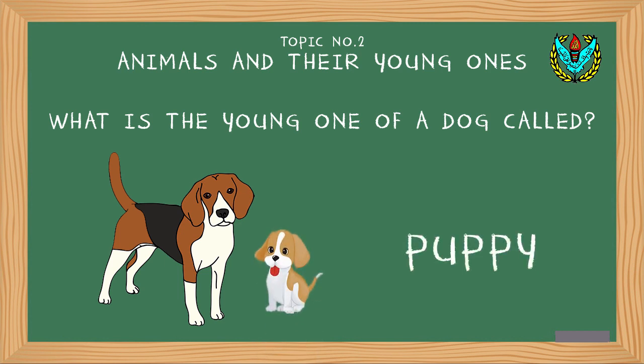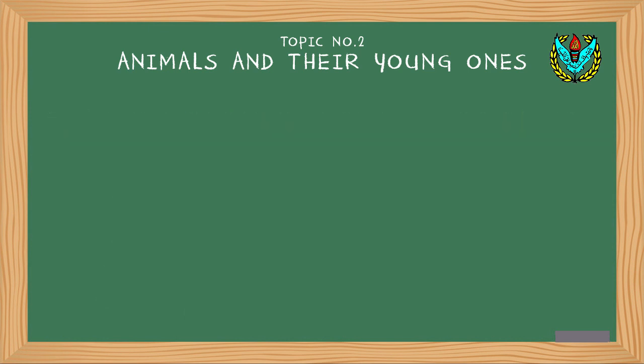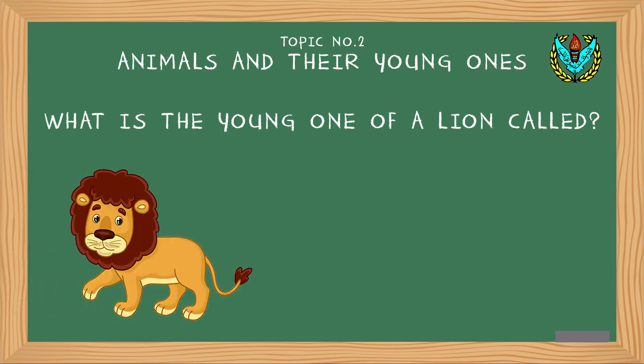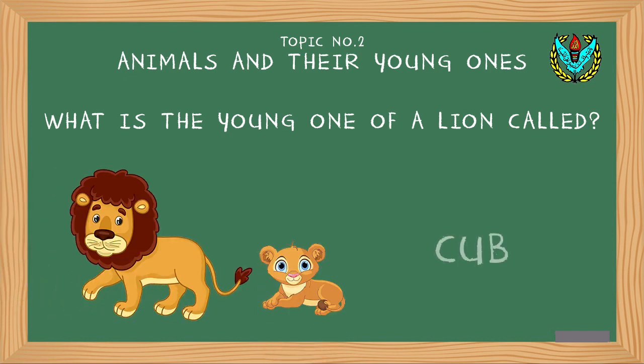Dog — Puppy. Next question: What is the young one of a lion called? The answer is cub. Lion — Cub.